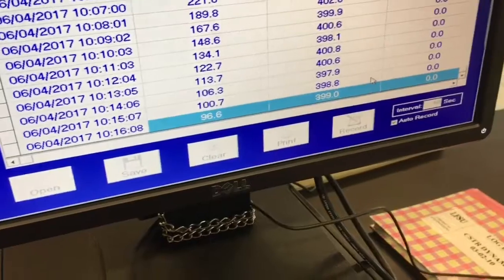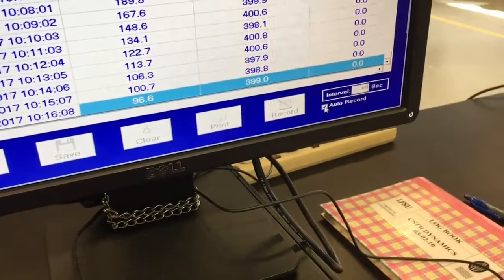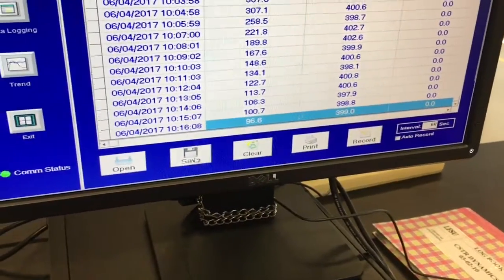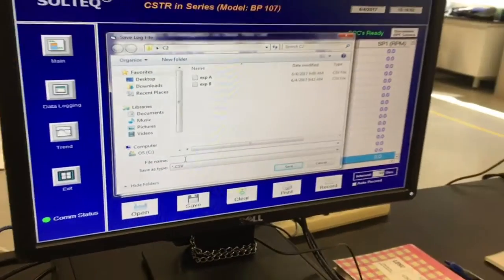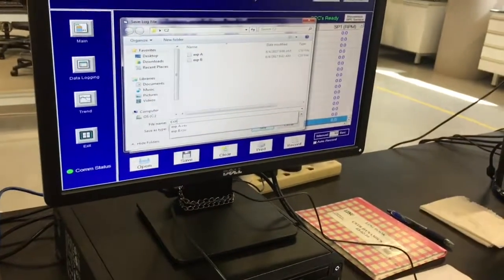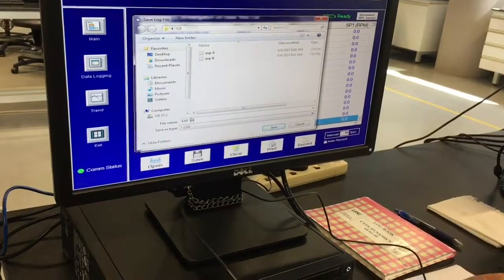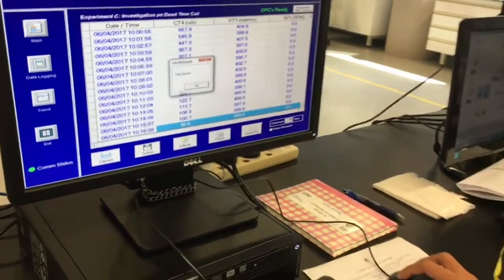So we can start recording. Unclick the autorecord, then save. We will save it with the name of experiment 3A.